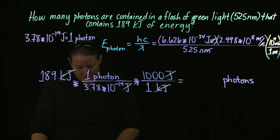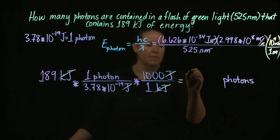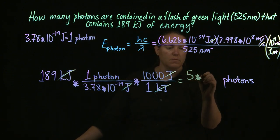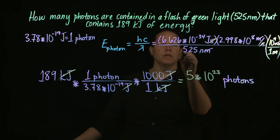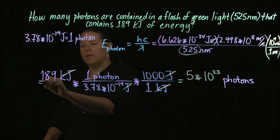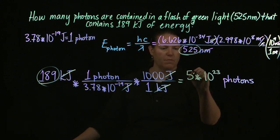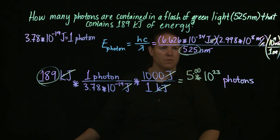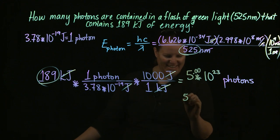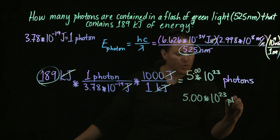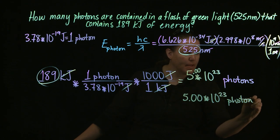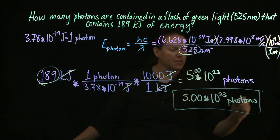189 times a thousand divided by 3.78 EE negative 19th gives me a crazy number of photons. How about 5 times 10 to the 23rd. If I wanted to do the correct number of significant figures here, there were three here, so I should put a 5.00. Let's go ahead and rewrite that out. Photons. And that is my answer, folks.